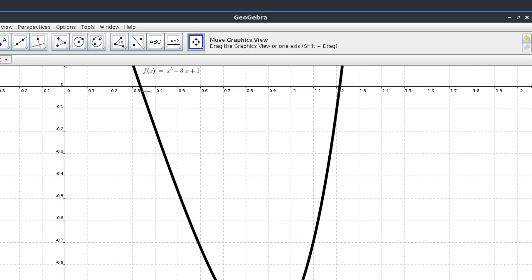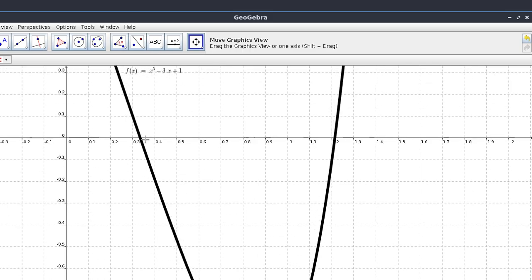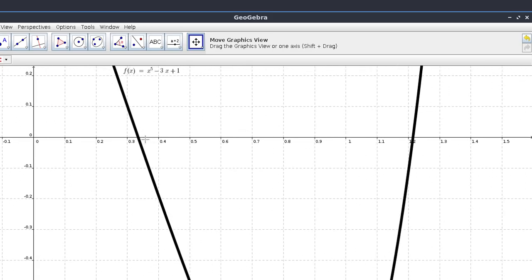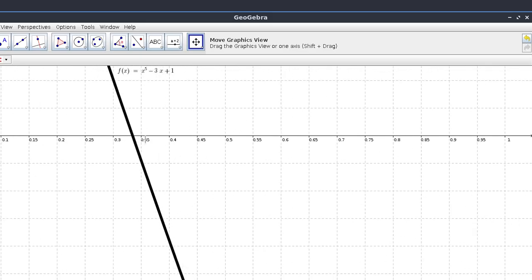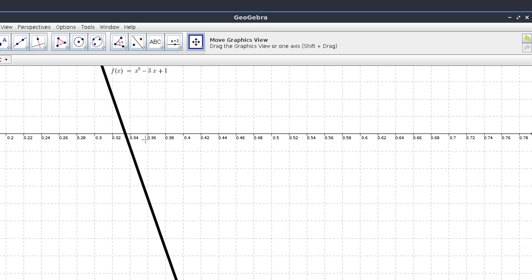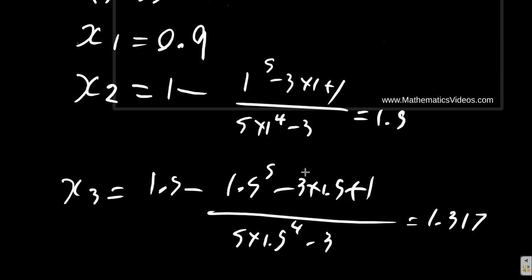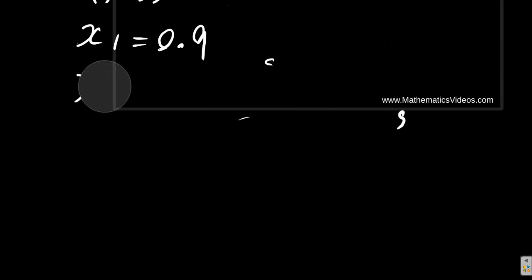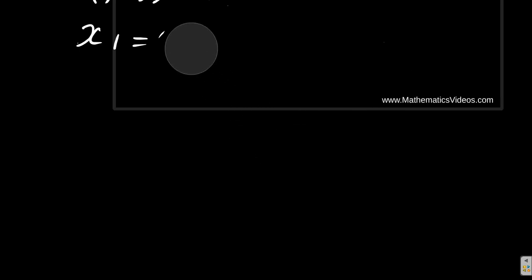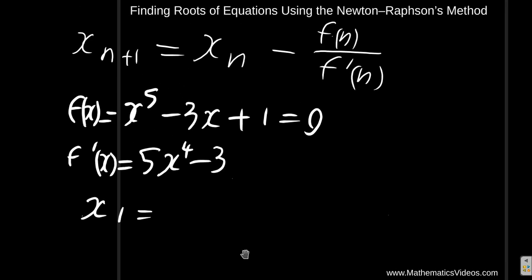There is a root somewhere here based on the graph. When I zoom in, I estimate that that root is between 0.2 and 0.4. It's a little more than 0.33. Well, let's use 0.4 and see what happens. So we want to find that other root. Our x1 is 0.4. Let's see where it takes us. x1 equals 0.4.